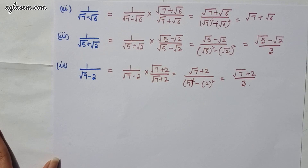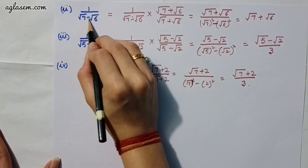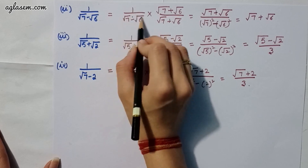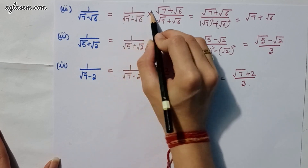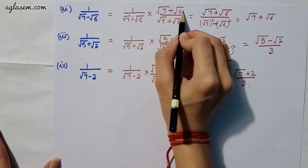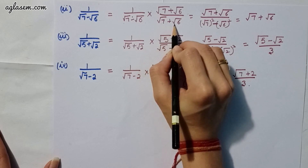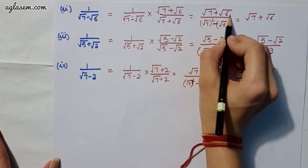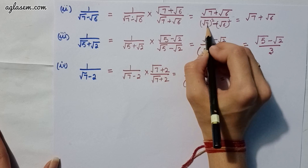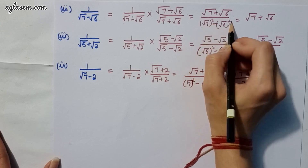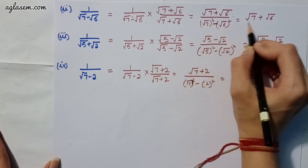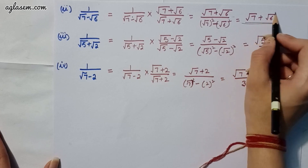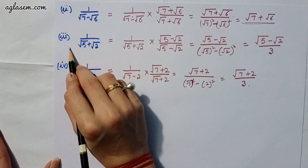Moving to our second part, which says 1 upon root 7 minus root 6. That means 1 upon (root 7 minus root 6) multiplied by (root 7 plus root 6) divided by (root 7 plus root 6). So the answer will be (root 7 plus root 6) divided by (root 7 whole square minus root 6 whole square), giving root 7 plus root 6.